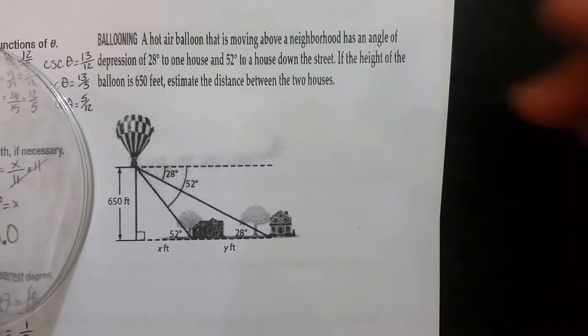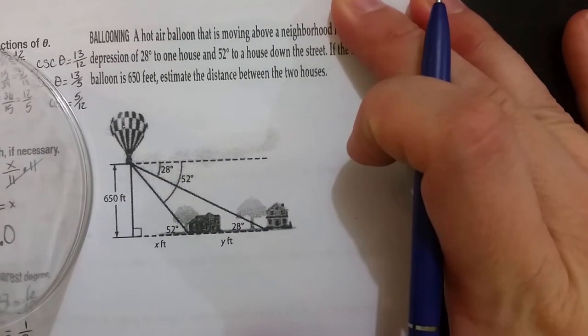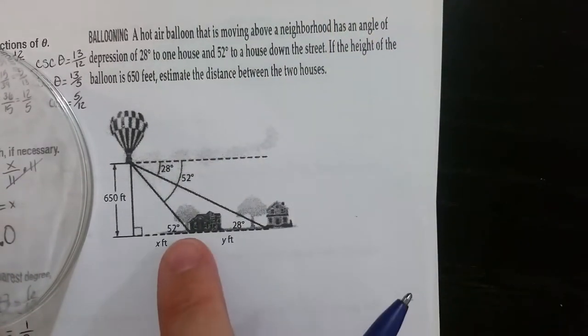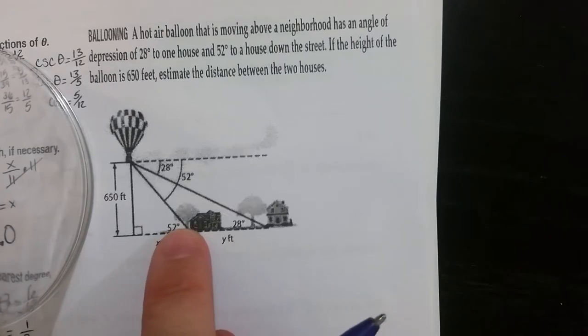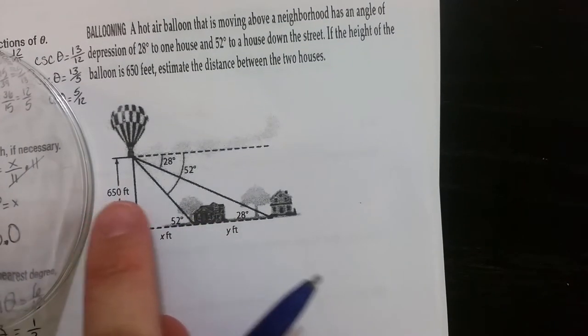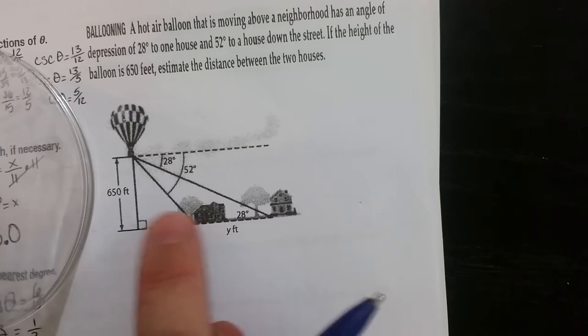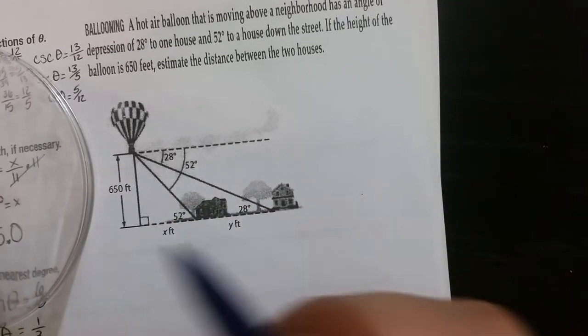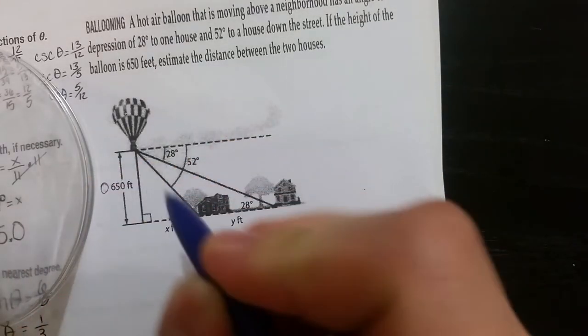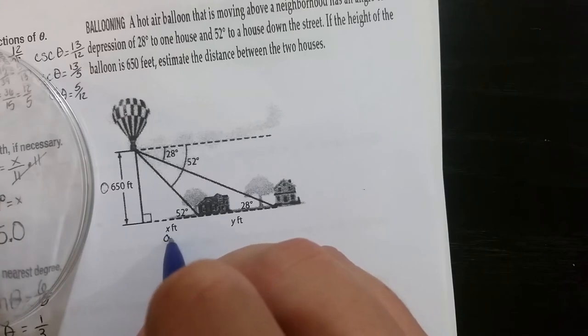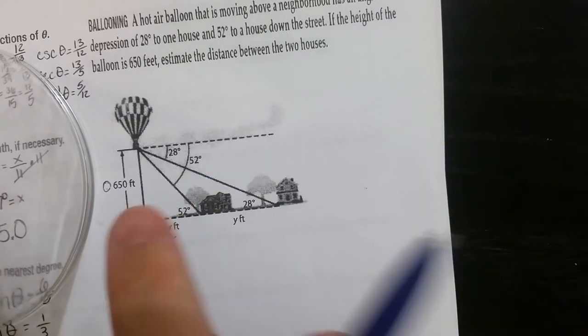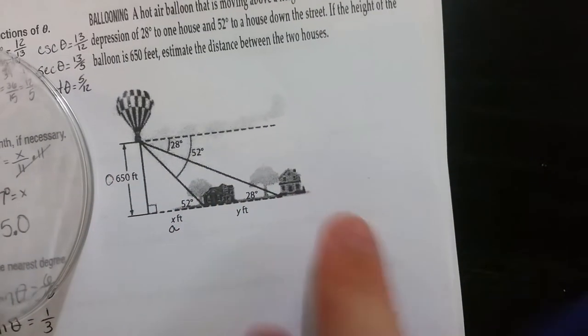From there you're going to use your trig functions and set up equations for basically both triangles. So what we're going to do here is from the 52, 650 is going to be opposite and X is going to be the adjacent. So if I have O and A, I'm going to be using tangent.